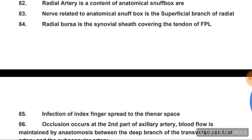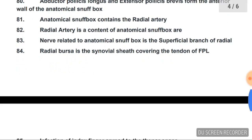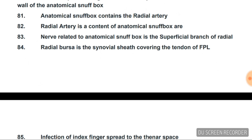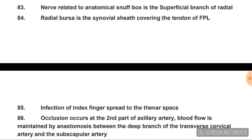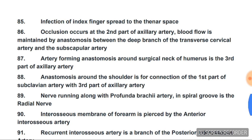The radial bursa is a synovial sheath covering the tendon of flexor pollicis longus. Infection of the index finger spreads to the thenar space. When there is occlusion of the second part of the axillary artery, blood flow is maintained by anastomosis between the deep branch of the transverse cervical artery and the subscapular artery.